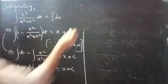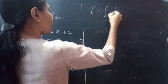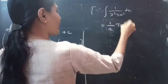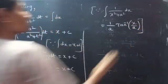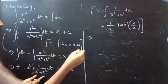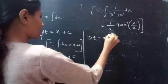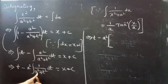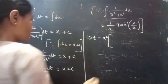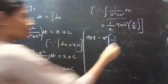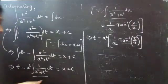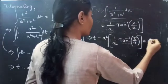We know that ∫ 1/(x² + a²) dx = (1/a) · tan⁻¹(x/a). We apply this formula to the second term, where a stays as a and x is replaced by t. So we get t − a² · (1/a) · tan⁻¹(t/a) = x + c.